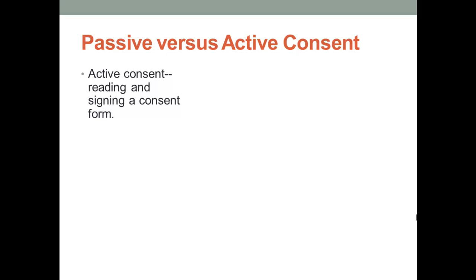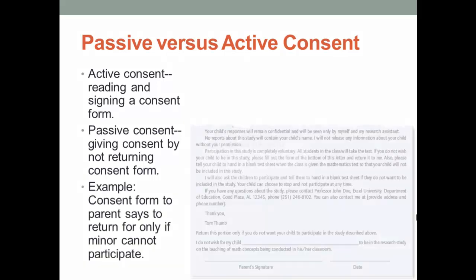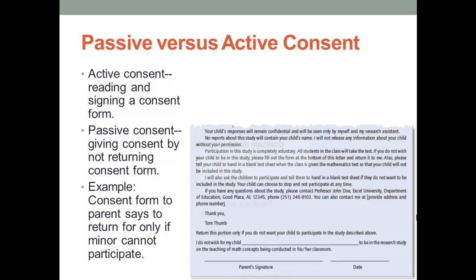Active consent is usually the preferred form of consent. Passive consent is the process whereby consent is given by not returning the consent form, as shown in Exhibit 5.5. The key passage in the passive consent form reads: 'Participation in this study is completely voluntary. All students in the class will take the test. If you do not wish for your child to be in this study, please fill out the form at the bottom of this letter and return it to me. Also, please tell your child to hand in a blank test sheet when the class is given the mathematics test, so your child will not be included in the study.'